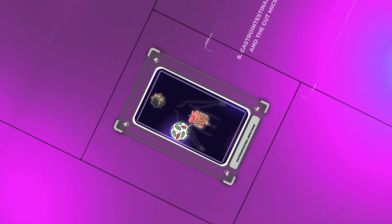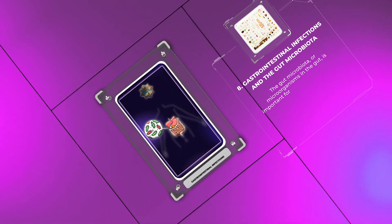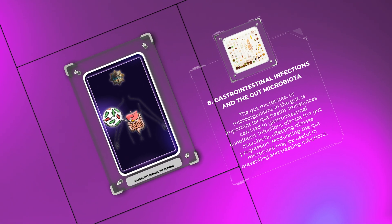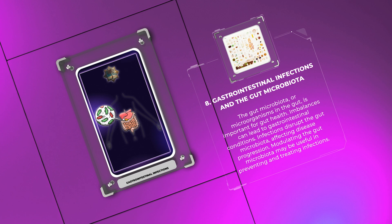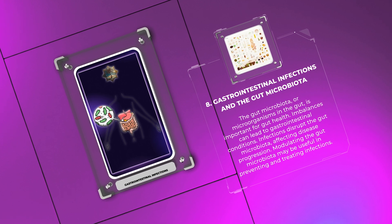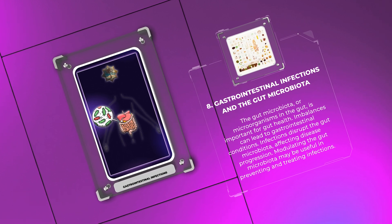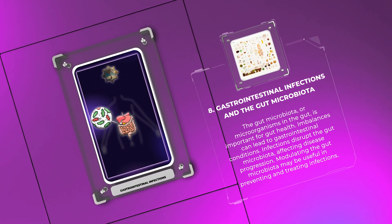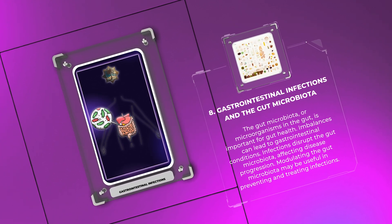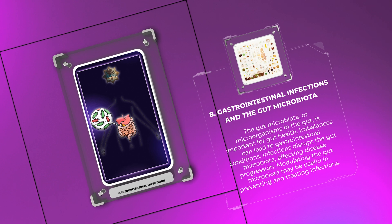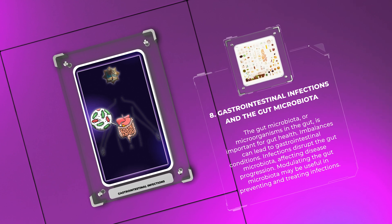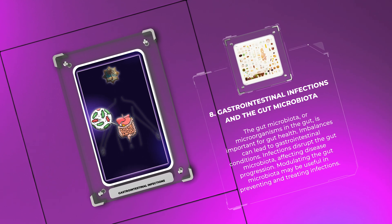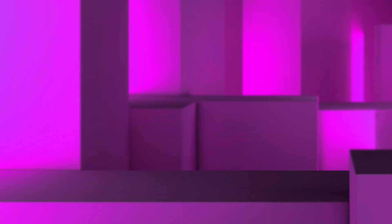The gut microbiota, or microorganisms in the gut, is important for gut health. Imbalances can lead to gastrointestinal conditions. Infections disrupt the gut microbiota, affecting disease progression. Modulating the gut microbiota may be useful in preventing and treating infections.